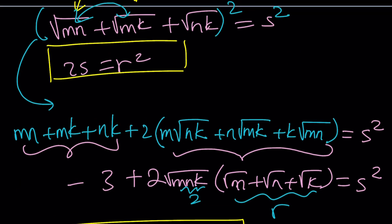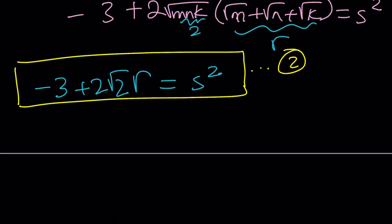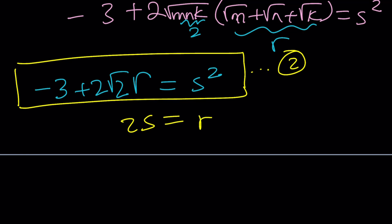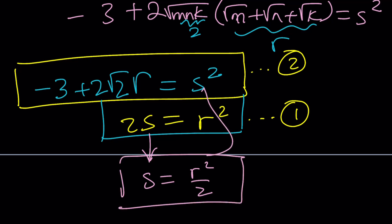So far, so good. Let's write this down in simplest form: -3 + 2√2·r = s². That's our second equation. Now consider 1 and 2 together. Let me copy one over here: 2s = r². That's equation number 1, and this top one is equation number 2. So what do you do? It's a system of equations. You probably know what to do, right? We're going to solve it. How do you solve it? The easiest way, and since we're looking for r, would be substitution.